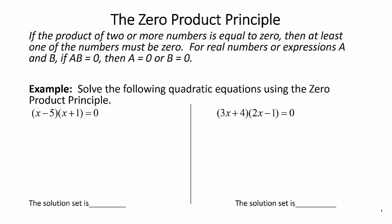In order to solve quadratic equations by factoring, we have to employ what's called the zero product principle. What this says is that if you've got a product of two or more numbers that's equal to zero, then at least one of the numbers must be zero. So for real numbers or expressions A and B, if A times B is equal to zero, then A equals zero or B equals zero.